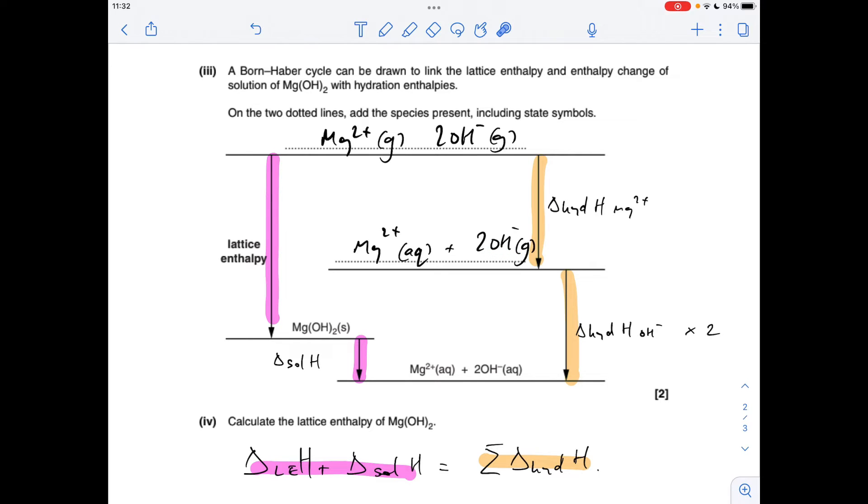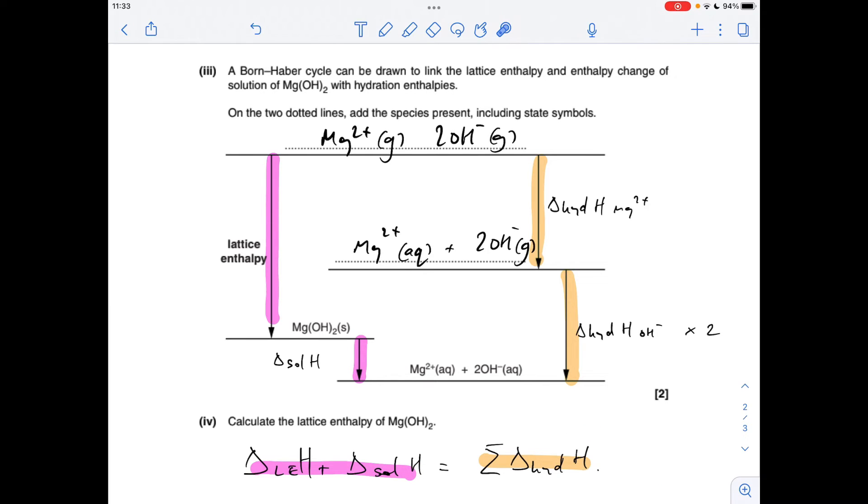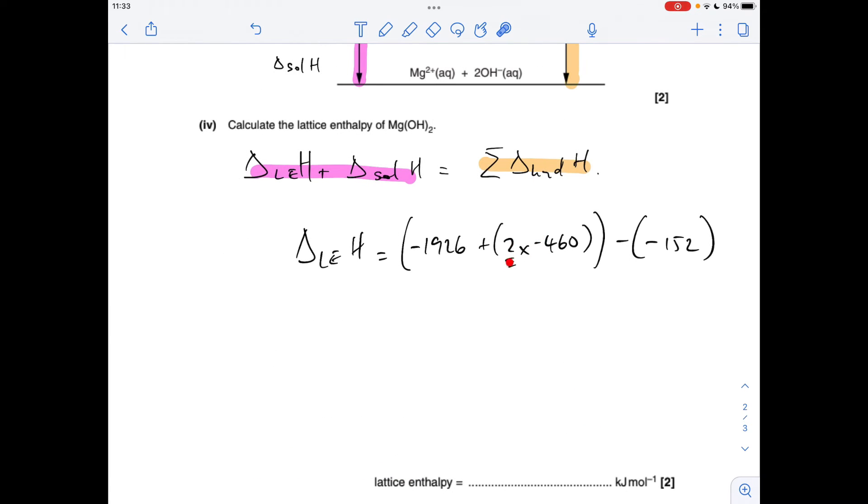Hess's law states that the sum of the enthalpy changes in each route equal each other, so if we want to find that we just need to take that over to the other side and flip its sign. So there's the numbers in, and just to remember that enthalpy change of hydration of hydroxide ion needs to be doubled, and the answer comes out at -2694 kilojoules per mole.